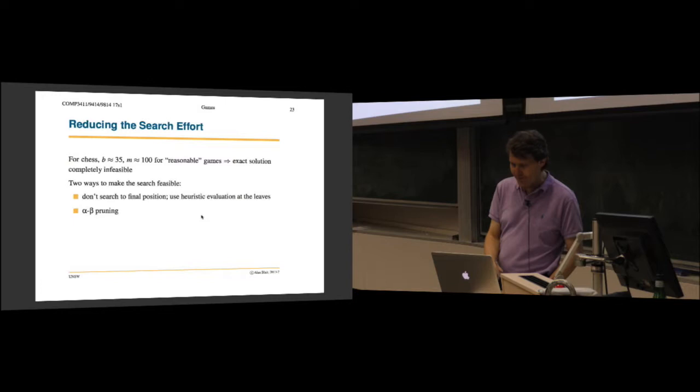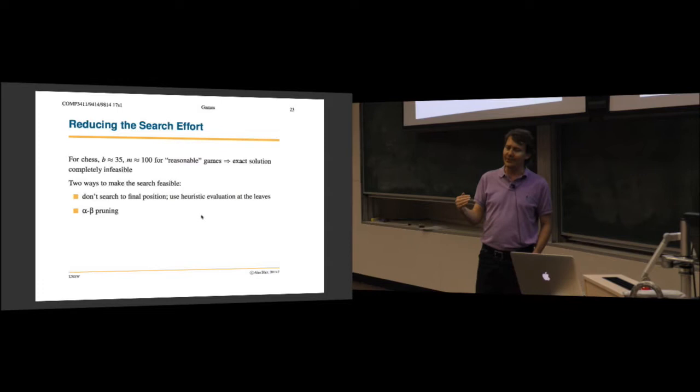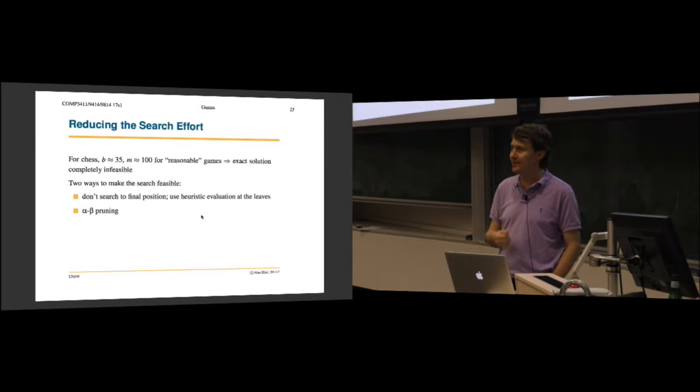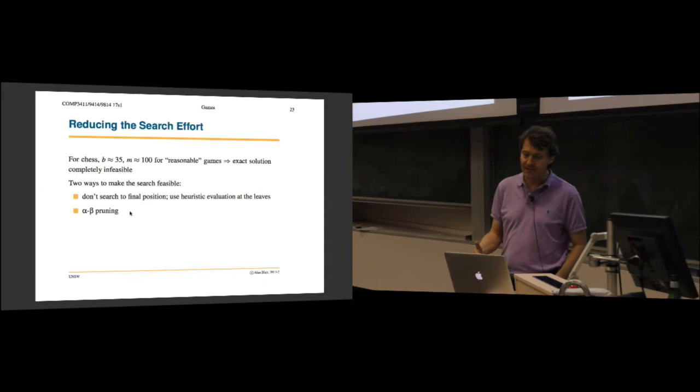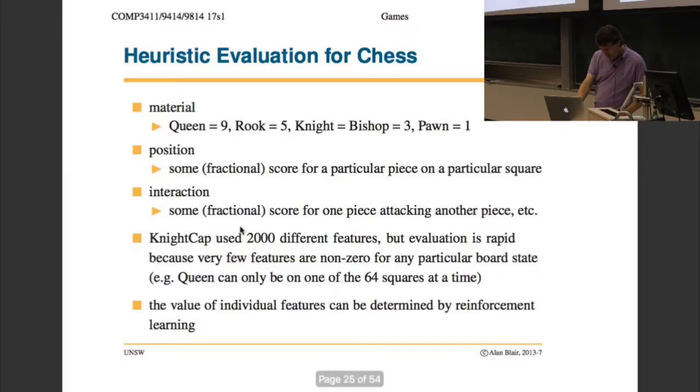So how do we deal with this in practice? Well, there's two ways to do it. So the first is we don't search all the way to the end. We just search to a limited depth. But then, when we get to that node, we have to come up with a heuristic estimate of the value of that node. What's our likelihood of winning from that position? Is that position better than another position? So we have to look at heuristic evaluation. And the other thing we can do is called alpha-beta pruning. It turns out that you don't actually have to search the entire tree. You can prune off some sections of the tree and yet still be guaranteed to get the same answer.